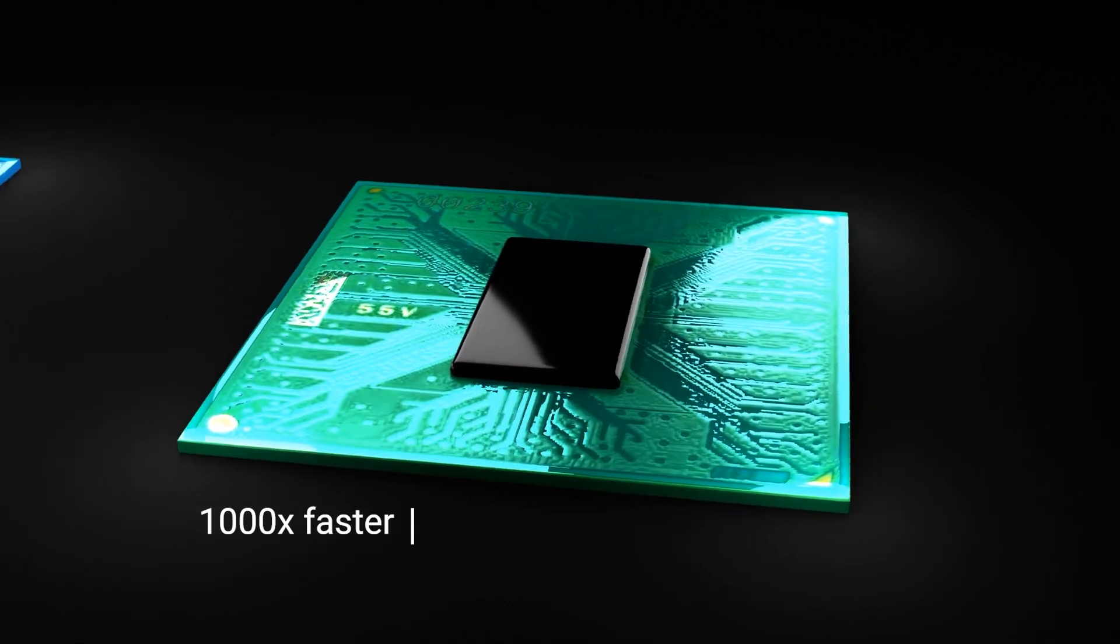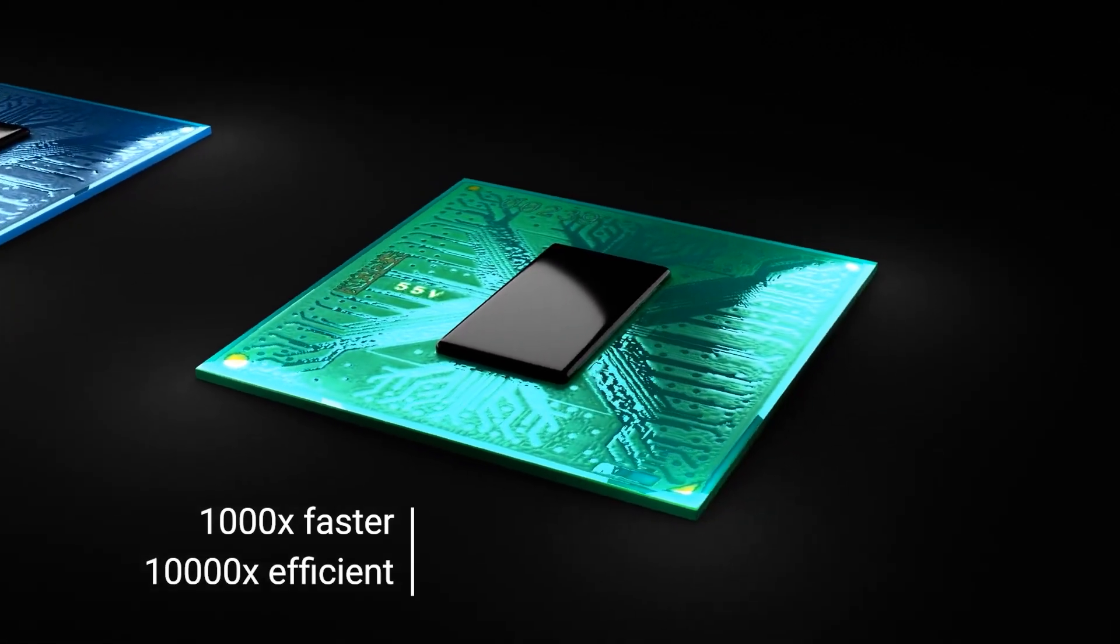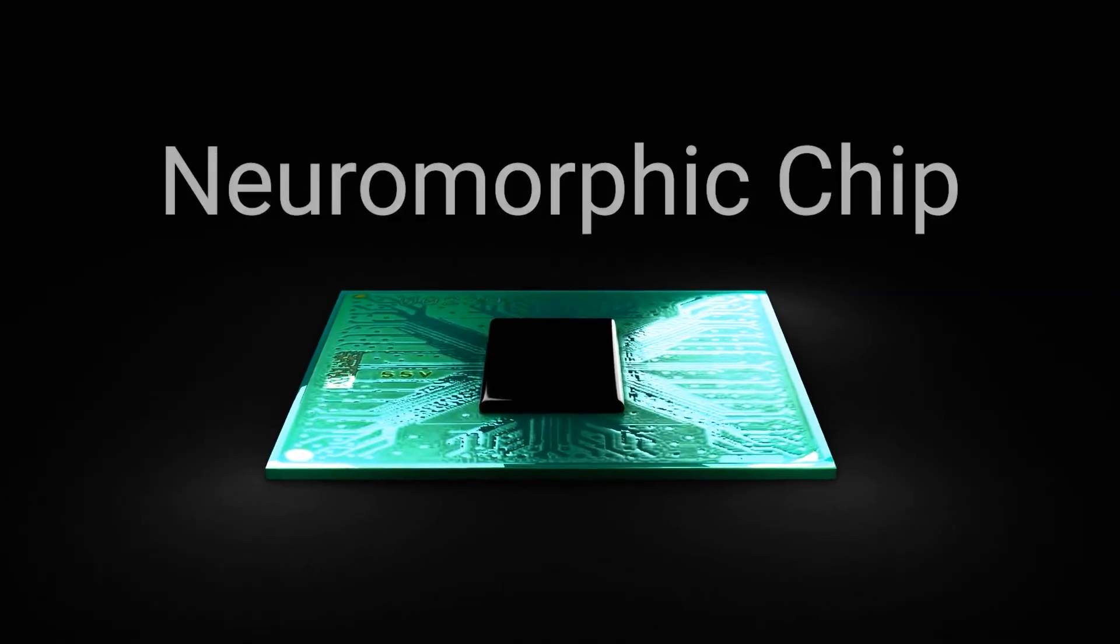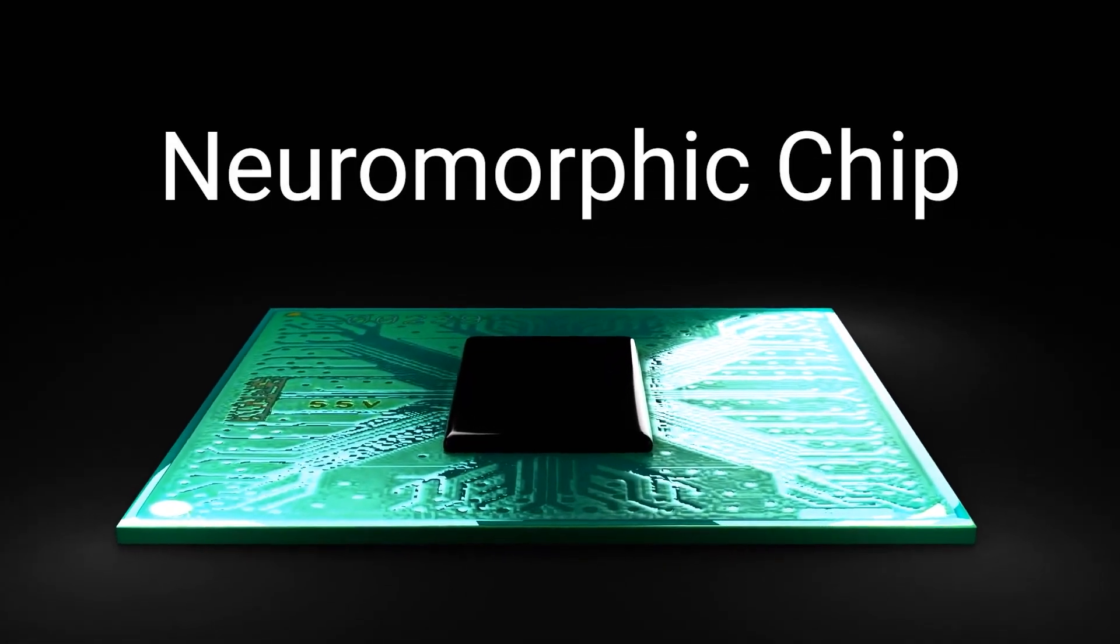However, this chip is 1,000 times faster and 10,000 times more efficient. It makes all the other chips overheat with jealousy. It's a neuromorphic chip and it's modeled after the human brain.